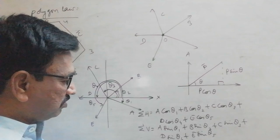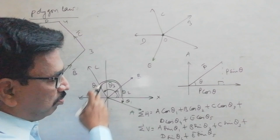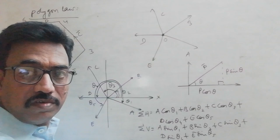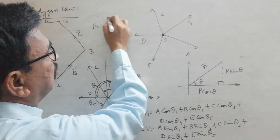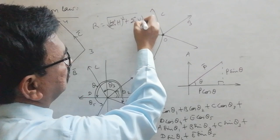Then we get the sum of all horizontal components: A cos theta1 plus B cos theta2 plus C cos theta3 plus D cos theta4 plus E cos theta5. And the sum of all vertical components will be A sin theta1 plus B sin theta2 plus C sin theta3 plus D sin theta4 plus E sin theta5. We can take the sum of horizontal components as sigma H and the sum of vertical components as sigma V.